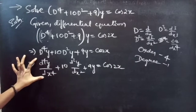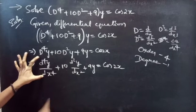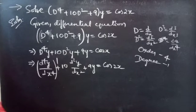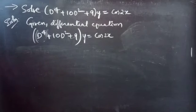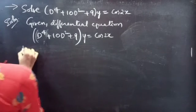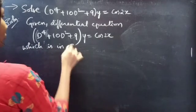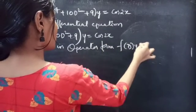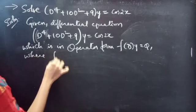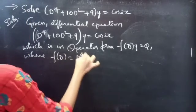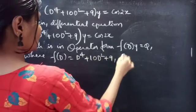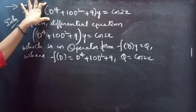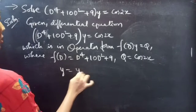We are given a differential equation in operator form, and Q = 2cos(2x). Now we need to find the general solution to the given non-homogeneous equation, which is given by y = yc + yp.